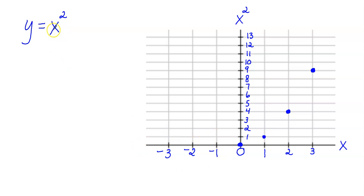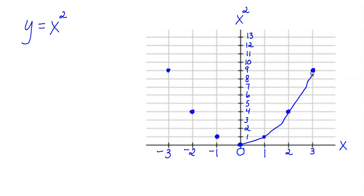The equation tells us to take the x values and square them, so let's do negative 3: negative 3 squared is negative 3 times negative 3, which is 9 — remember, negative times negative is positive. Negative 2 squared is negative 2 times negative 2, which is 4. Negative 1 squared is 1. Now let's make the graph — it looks like the letter U, so that's a good thing to remember.